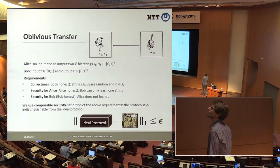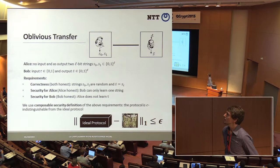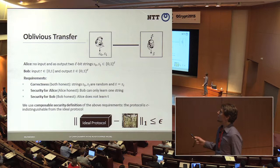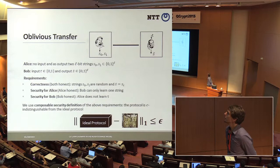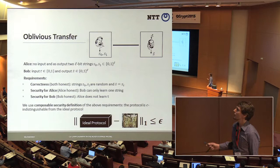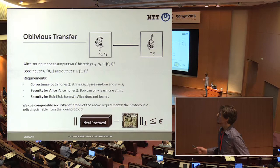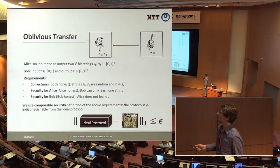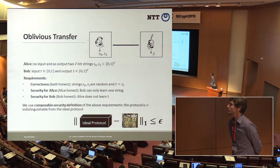We are concentrating on oblivious transfer, and we look at the randomized version where Alice outputs two L-bit strings, and Bob has a choice bit T as input and an L-bit string as output. Correctness means first that the output strings are random so Bob cannot guess them, and that Bob's choice input is reflected in his output — so his output is actually S_T, the message he wants to learn.